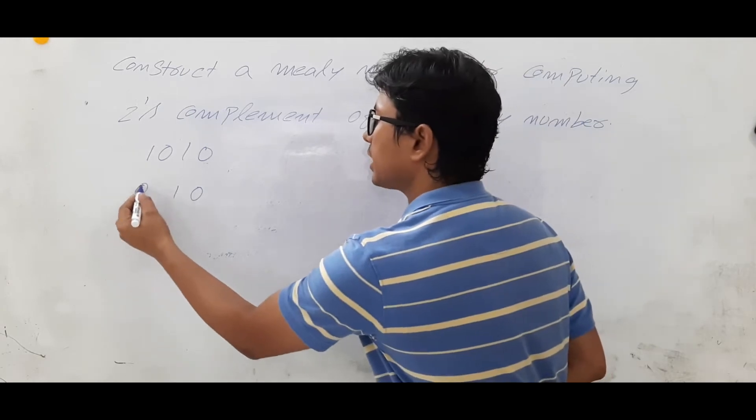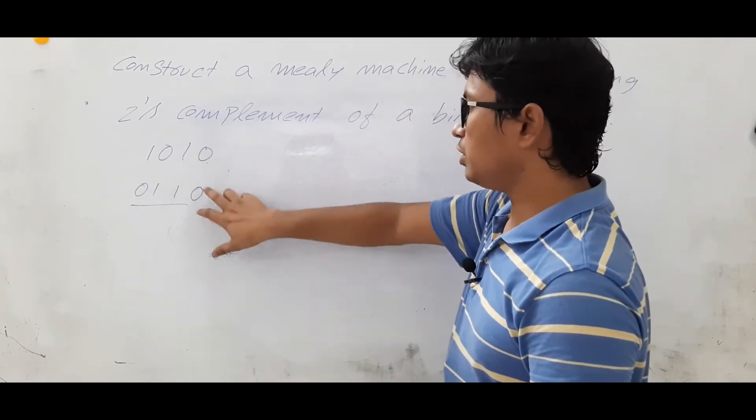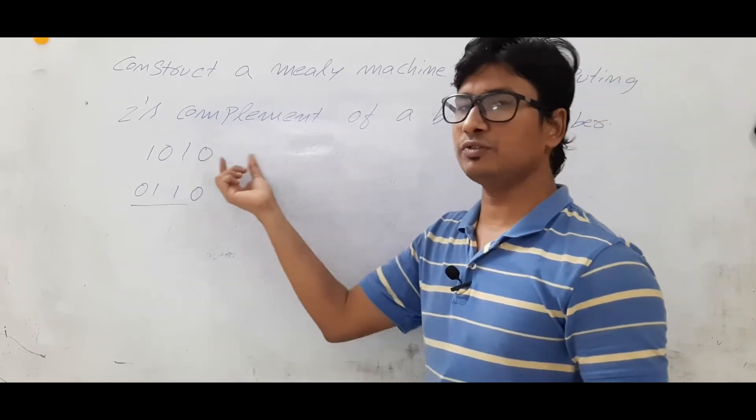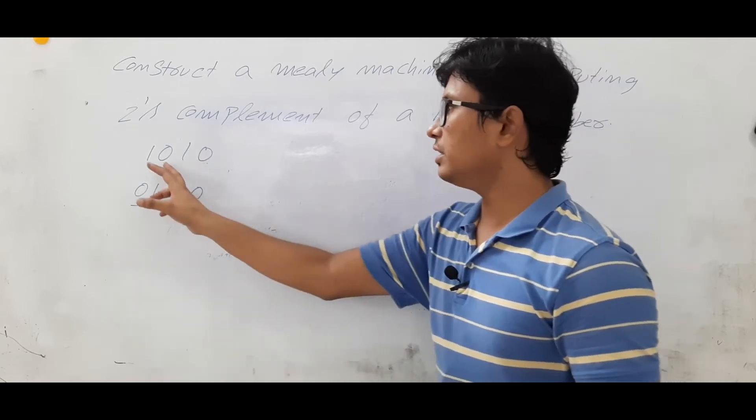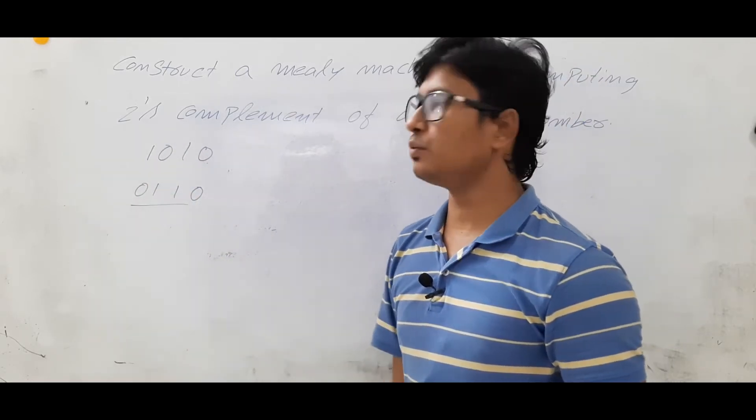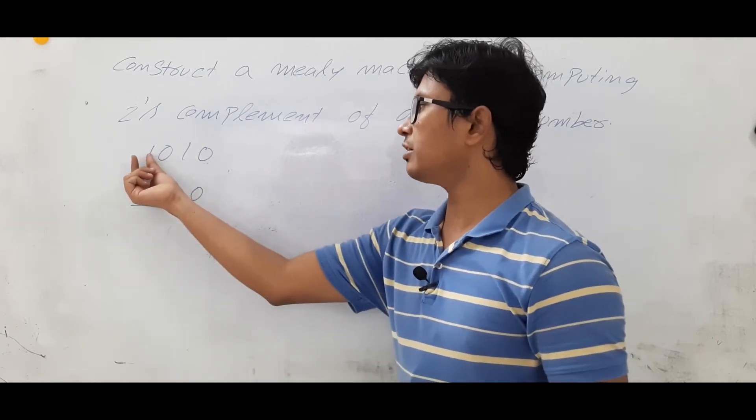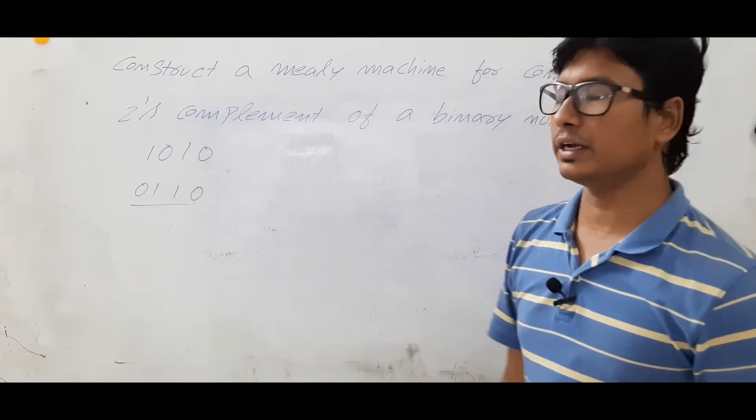The remaining numbers you will calculate 1's complement of it. Any number of zeros if you are getting initially you will keep it as 0. First one you will keep it as 1 as it is. The remaining bits whatever is coming after 1, you should calculate the 1's complement. 1's complement of 1 is 0, 0 is 1. So this is the 2's complement of a given number.